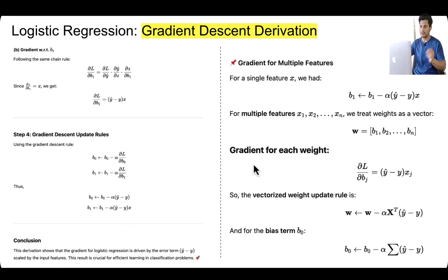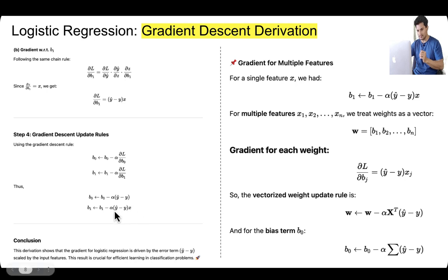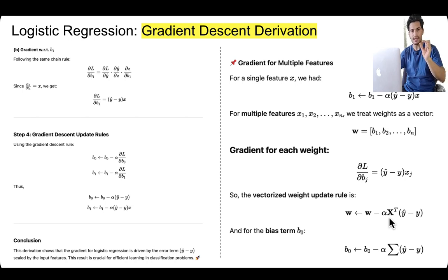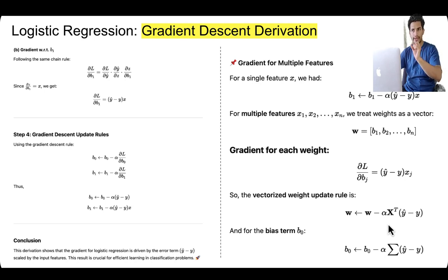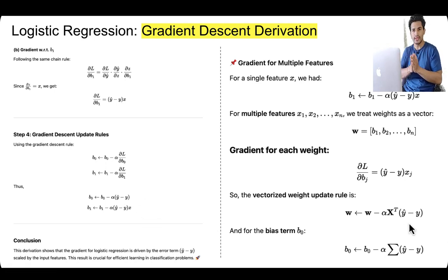These gradient calculations are for one feature, but in real life we have multiple features, so we write this in vector notation. X is the training data matrix with n rows and m features, and w is the vector of coefficients for all features. The vectorized update rule is: w = w - α · Xᵀ(ŷ - y), same idea but in vector notation. The bias term: b₀ = b₀ - α·(ŷ - y). With n training samples and m features, Xᵀ is m×n and (ŷ - y) is n×1, giving m×1 — the number of coefficients. This is just the vectorized notation for efficiency using matrix multiplication.